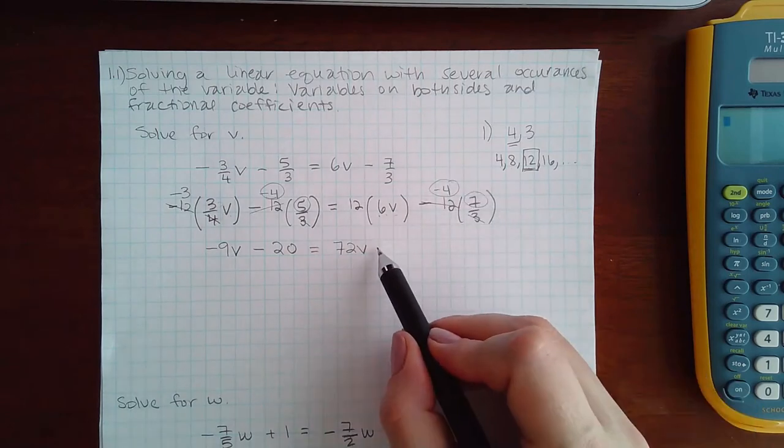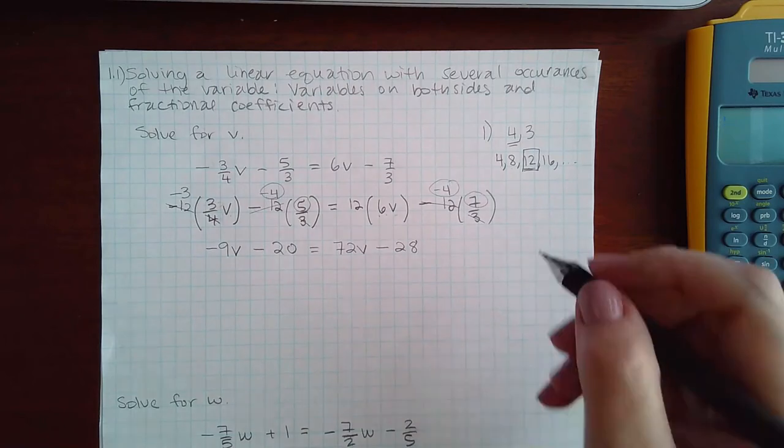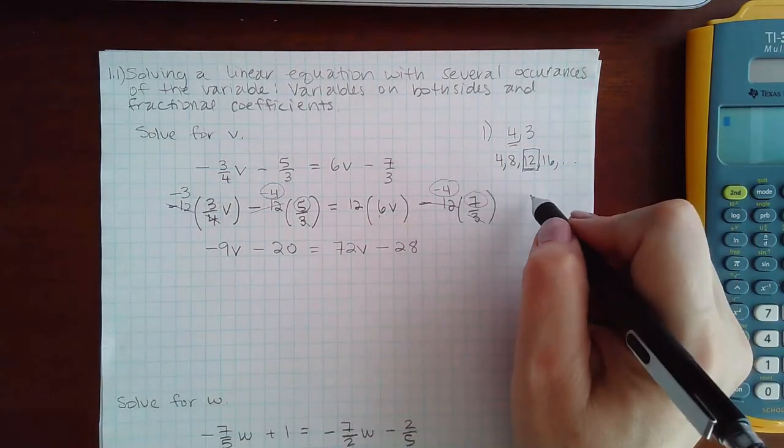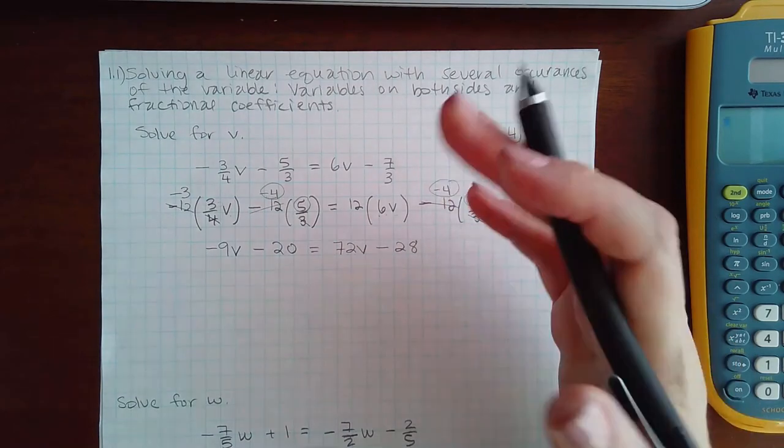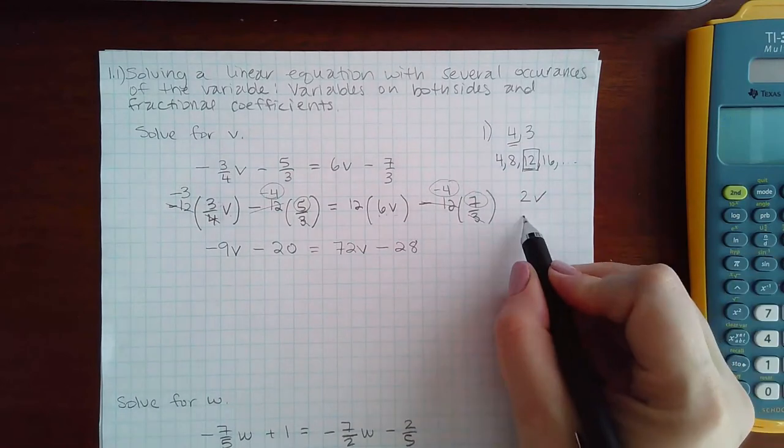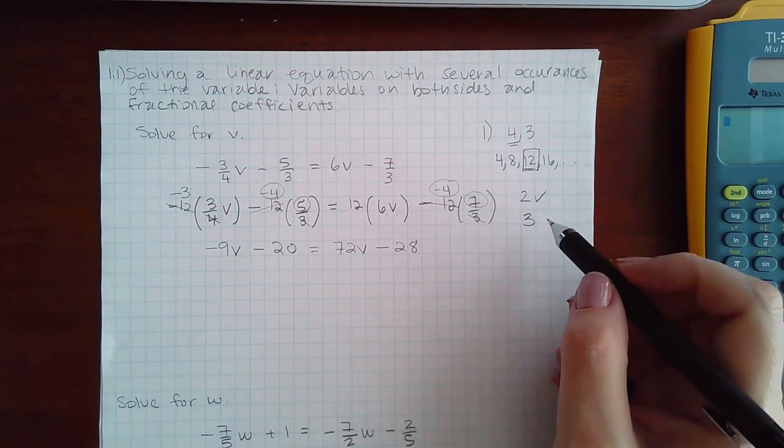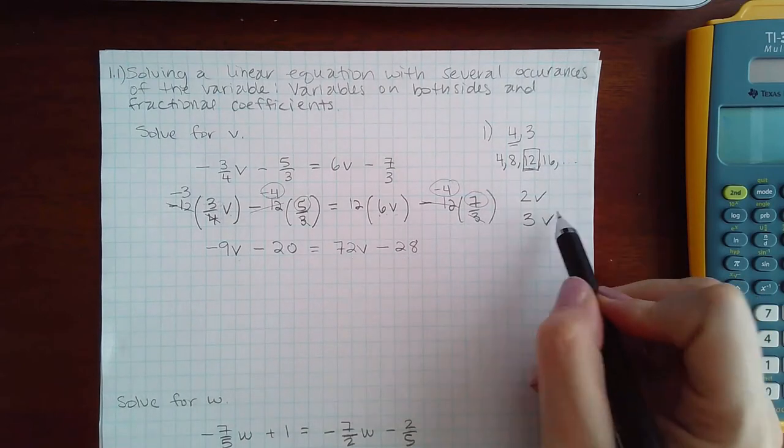Then you would need to do step 2. We kind of did step 1 and step 2 at the same time. We eliminated the variables and the parentheses by multiplying, so step 2 is done. Step 3 is to combine like terms on both sides, but you have variable constant variable constant, so there's nothing to do there.